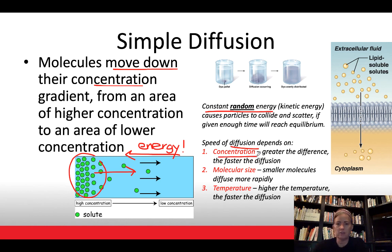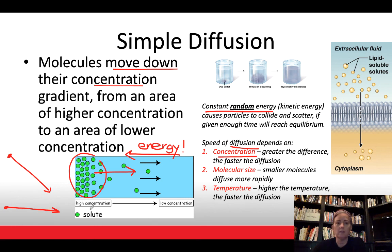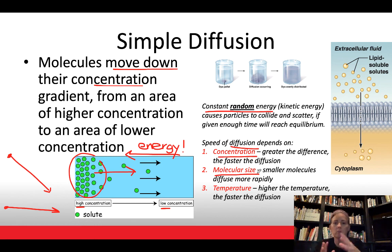The three factors affecting diffusion speed are: concentration difference — the greater the difference, the faster the diffusion, like a steeper hill; molecular size — smaller molecules have increased kinetic energy and diffuse more rapidly; and temperature — the higher the temperature, the faster the diffusion.